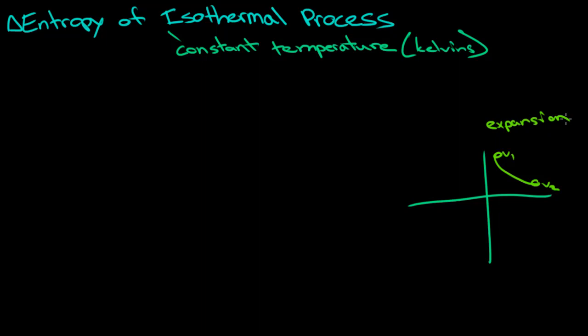Now, to calculate the change in entropy, first we have to know what the definition of entropy is. So the change in S, and this is entropy, is equal to delta Q over T. And this is assuming a constant temperature and it's assuming the reaction or process is reversible. This does not account for irreversible reactions.